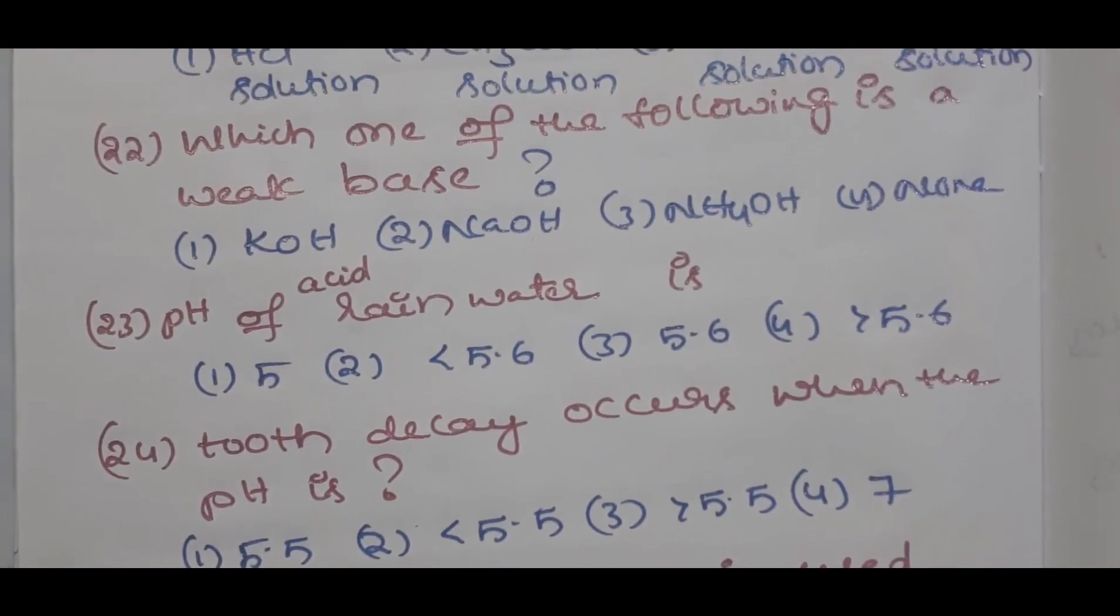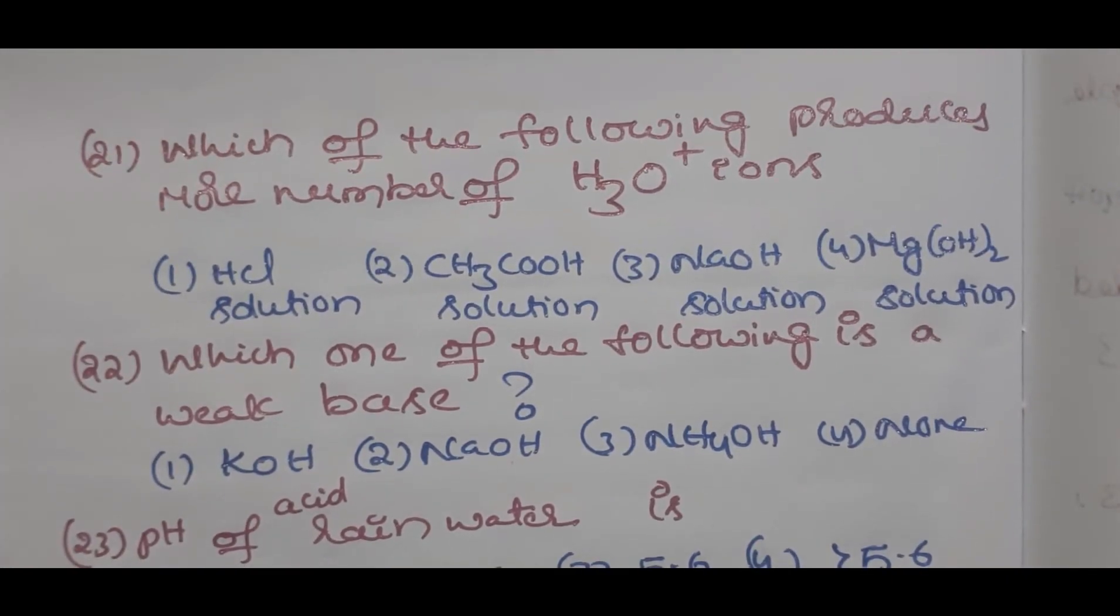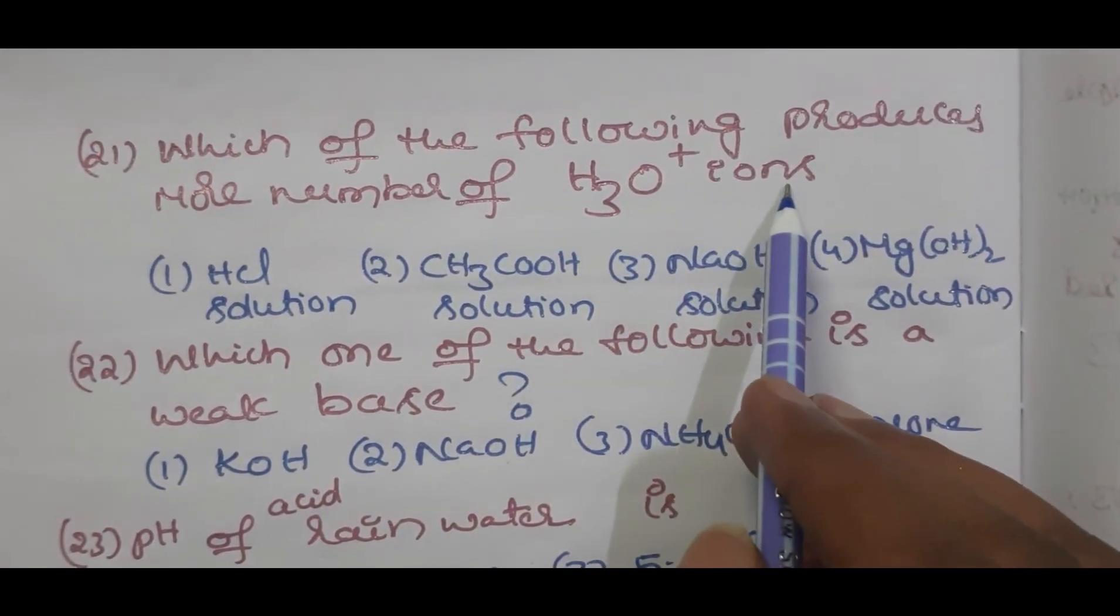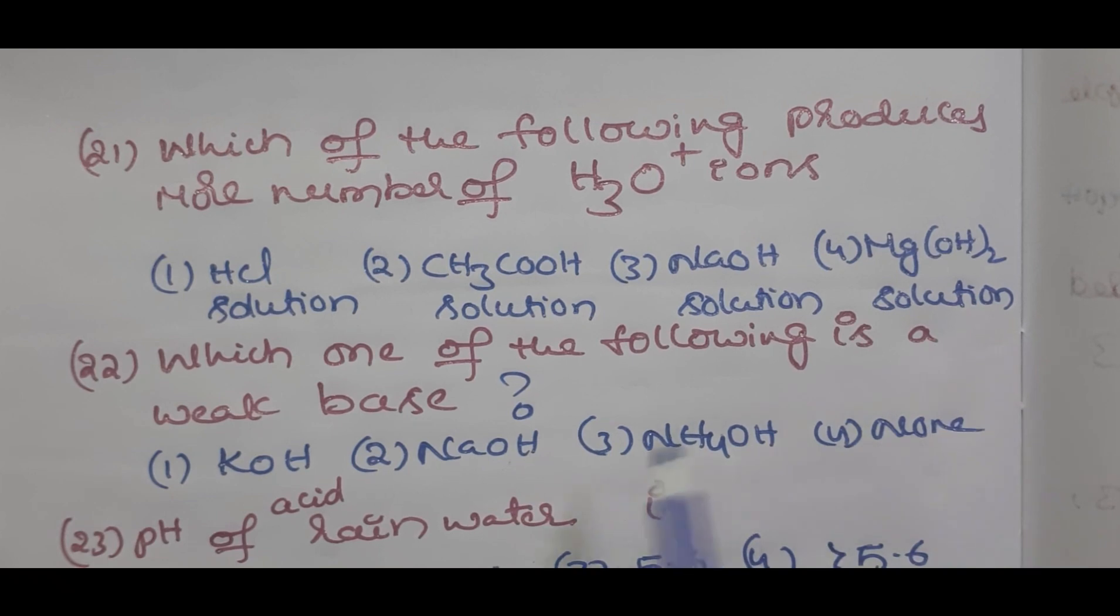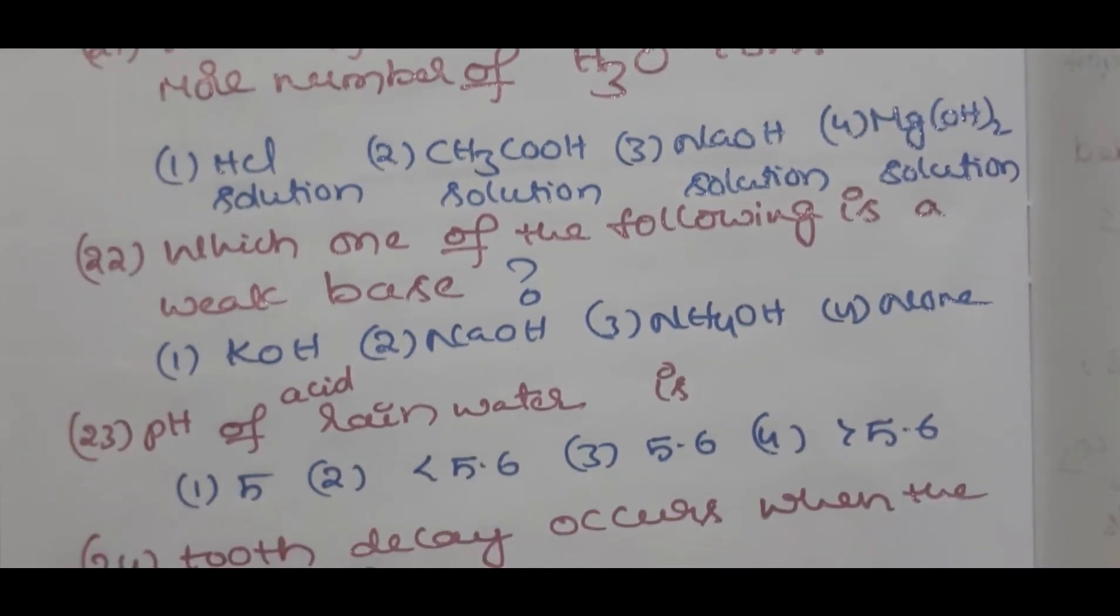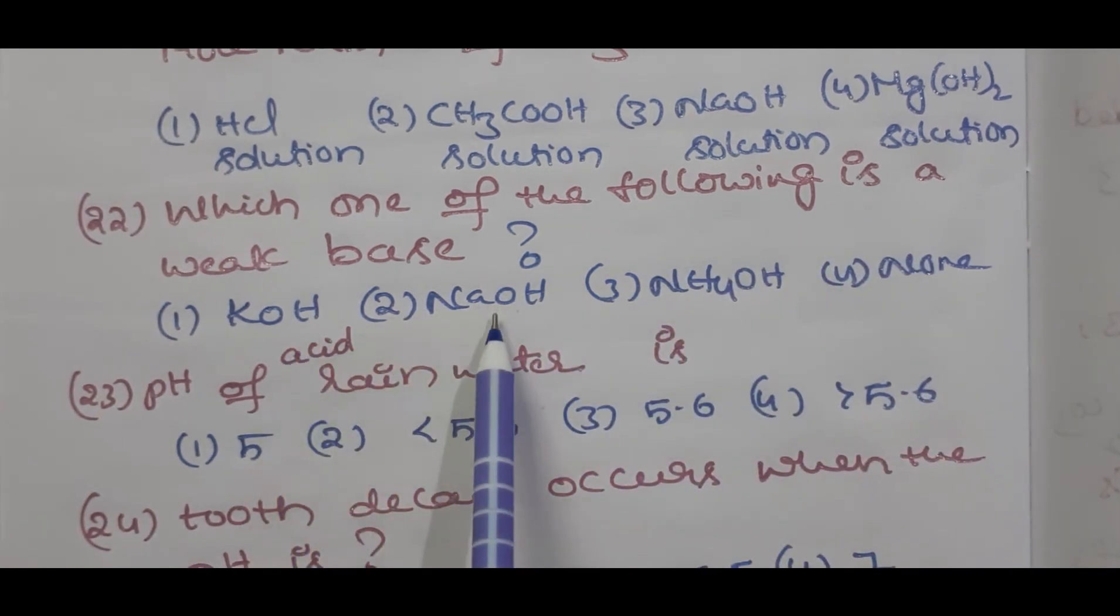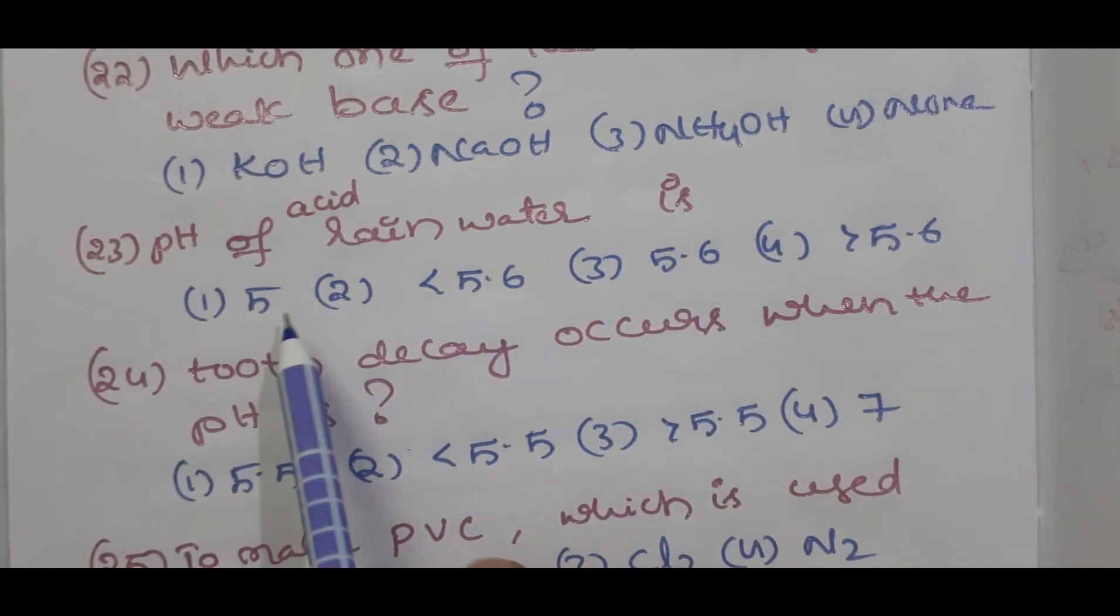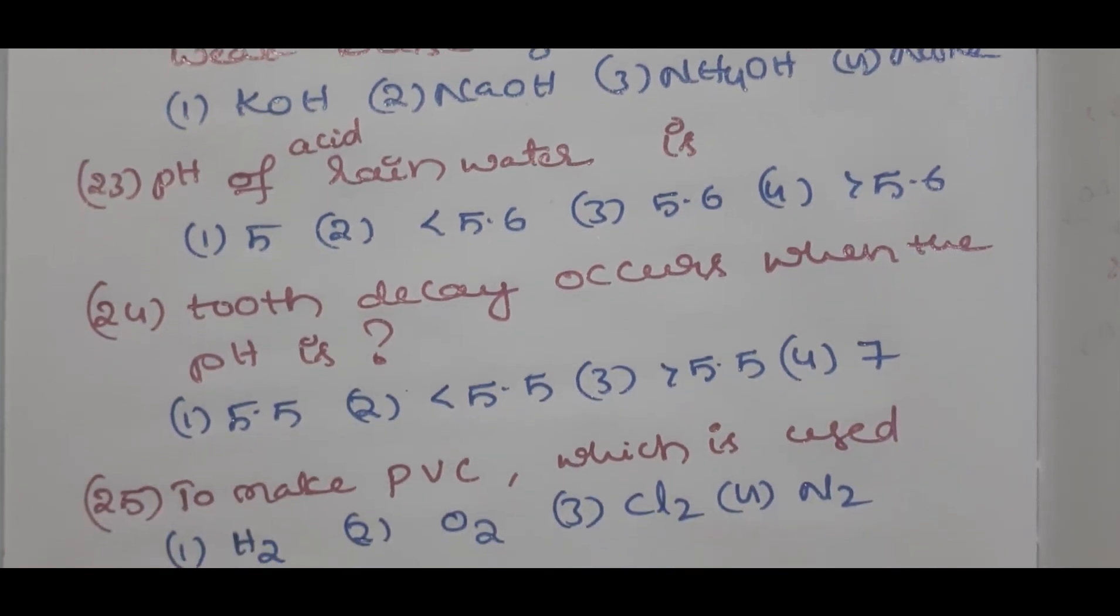Question number 21: total 26 questions are important to prepare from acids, bases and salts for POLYSET and APRJC. Which of the following produces more number of H3O⁺ ions - HCl, CH3COOH, NaOH, Mg(OH)2? Question number 22: which one of the following is a weak base - KOH, NaOH, NH4OH, none?